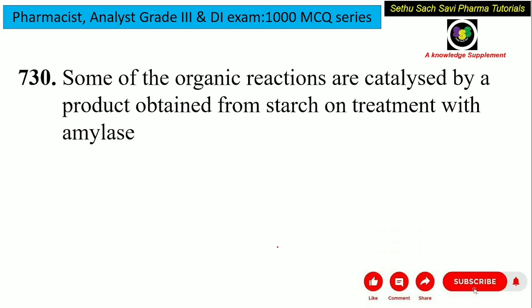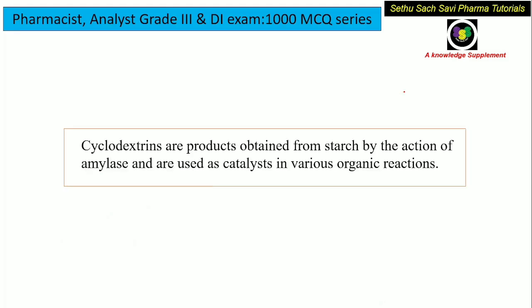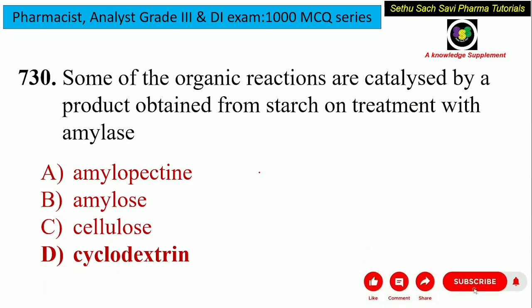Some organic reactions are catalyzed by a product obtained from starch on treatment with amylase. Is it amylopectin, amylose, cellulose, or cyclodextrin? Since it is used for catalyzing reactions, the answer is clear — it is cyclodextrin. Cyclodextrin is obtained from starch by the action of amylase, and it is used for catalyzing various organic reactions. So the answer for this question is option D, cyclodextrin.